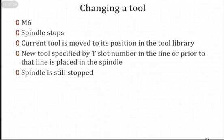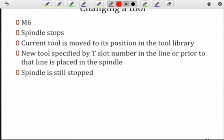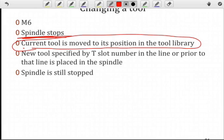What happens when you want to change a tool? Well, first thing is you have to specify an M6 code in your program. At that point, the spindle is going to stop because we're going to change the collet. And the current tool is going to be moved to its position in the tool library. The new tool that was specified by the T value, so T1, T2, and so forth, prior to our M6 is placed in the spindle. The spindle is still stopped. So, of course, you're going to have to start it up again in order to run your program.